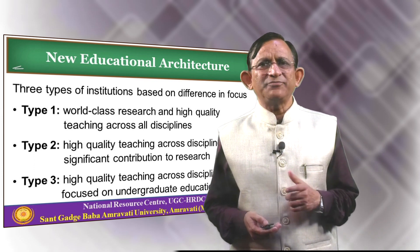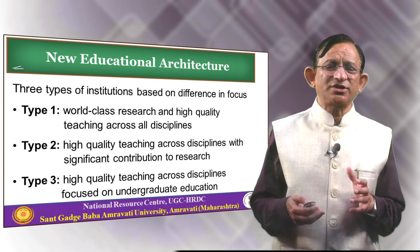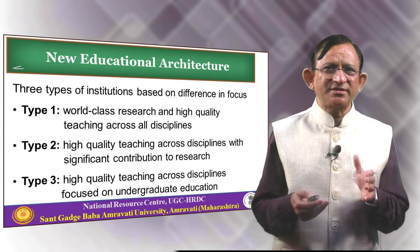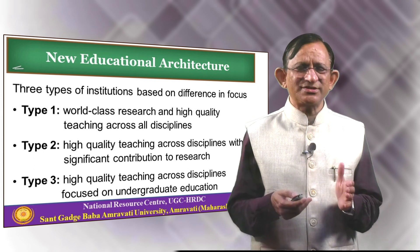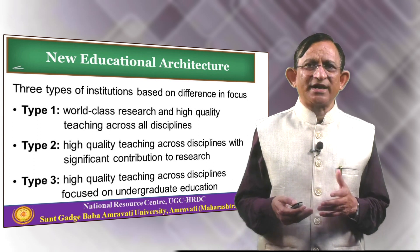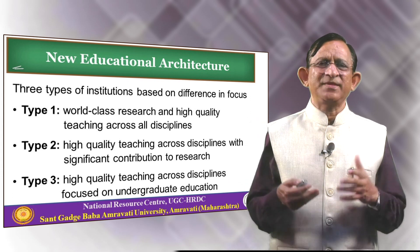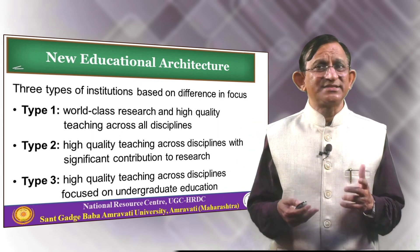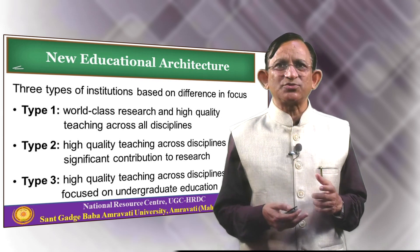This is not the only type of competency we need. We also need institutions where there is a striking balance between research and high quality education. Human resources full of knowledge across different disciplines, having the capacity to innovate and do research, are required. This second type of institution will focus on high quality teaching across all disciplines, also contributing to research. Research and teaching will go hand in hand, but with more focus on high quality teaching.